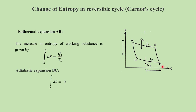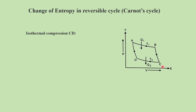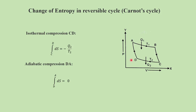The third stage is isothermal compression along CD. The working substance rejects heat Q2 to the sink at temperature T2. In the adiabatic stage, there was no heat exchange, so the entropy change was zero. Here in isothermal compression, the amount of heat rejected is Q2 at temperature T2, the entropy of the working substance decreases, and the change in entropy is the integral from C to D of dS equals minus Q2 by T2. The fourth stage is adiabatic compression along DA — again no heat exchange, so the change in entropy is zero: the integral from D to A of dS equals zero.